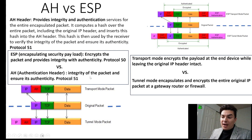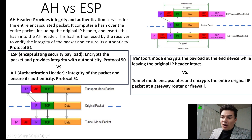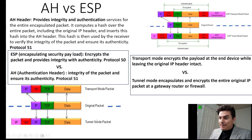Here's how authentication header works: it has the IP address, authentication header, and all of this is in clear text — just like in tunnel mode — so everyone is able to read everything.